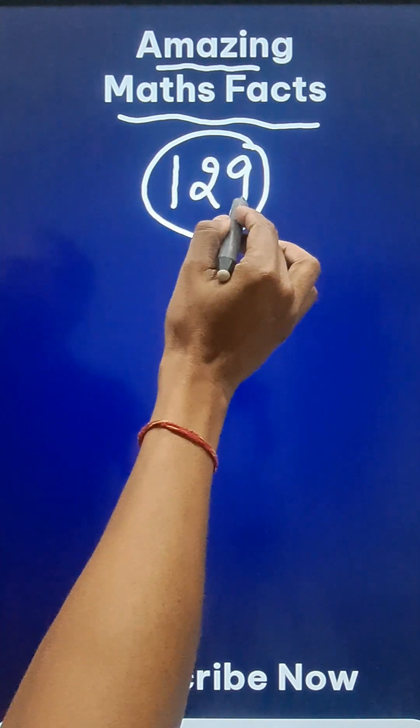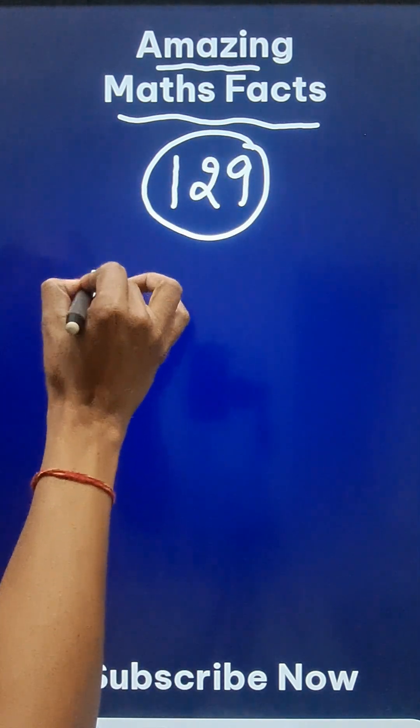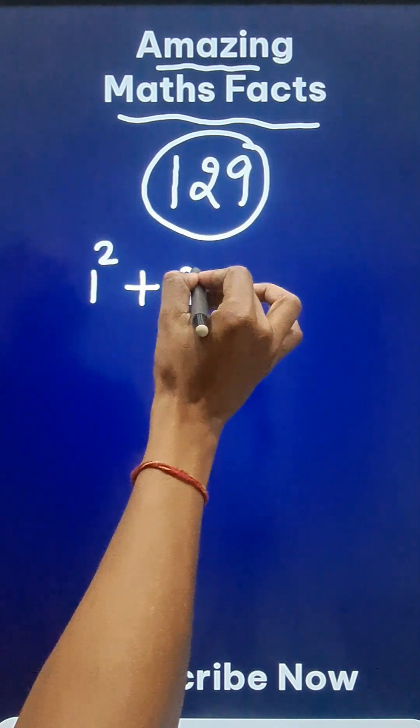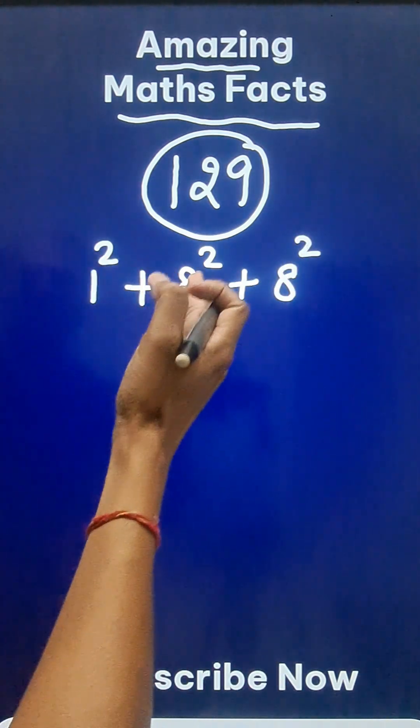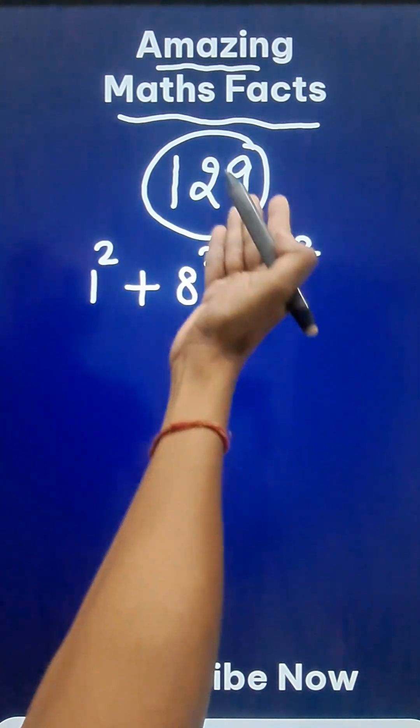Do you know this number 129 is actually the sum of squares of 1, 8 and 8. So what is so special? 1 square plus 8 square plus 8 square is 1 plus 64 plus 64 that is 129.